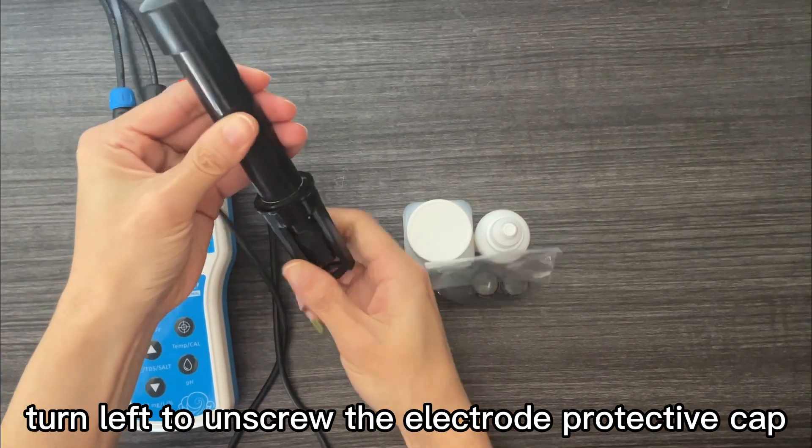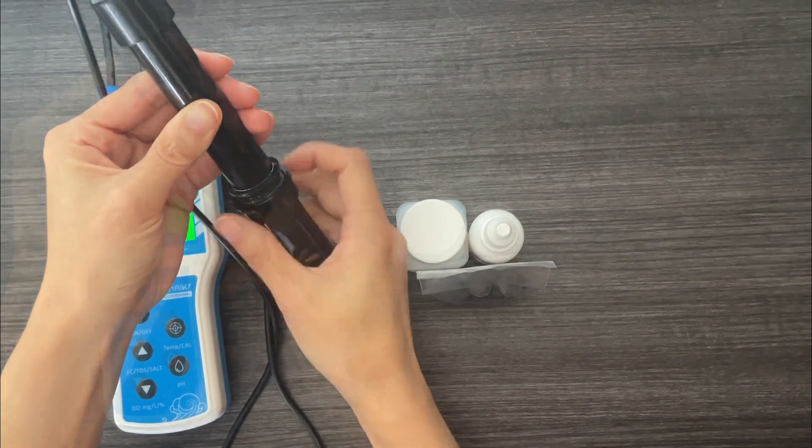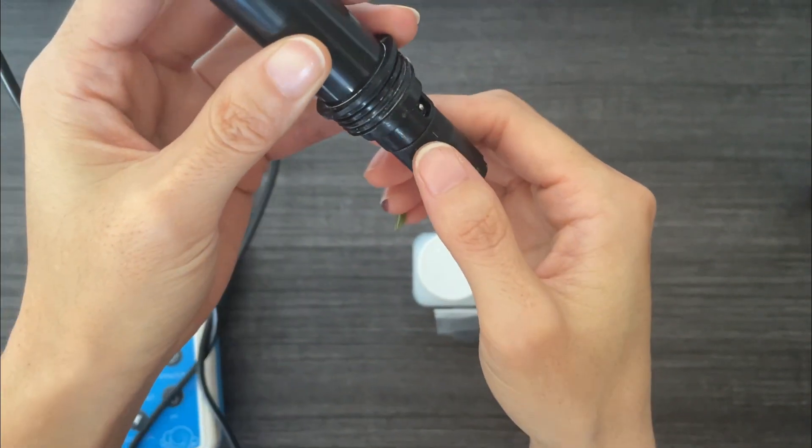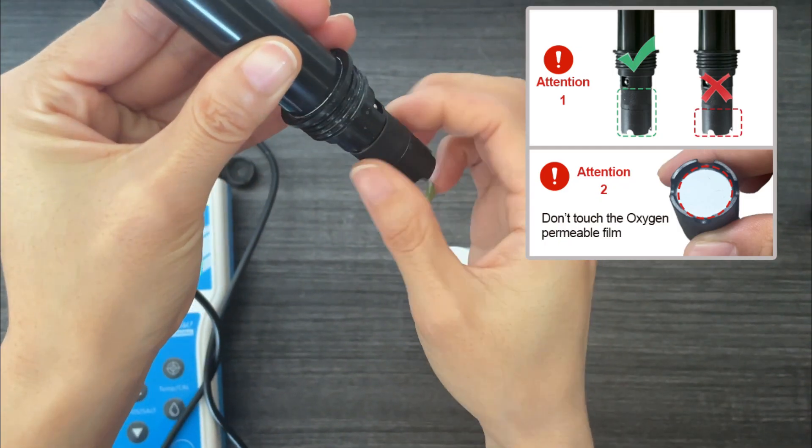Turn left to unscrew the electrode protective cap. Remove the old membrane. Pay attention to the entire part of the rotating membrane.